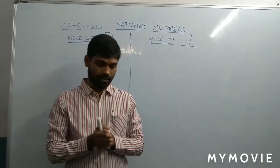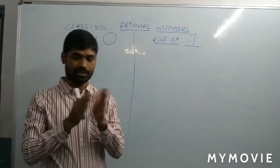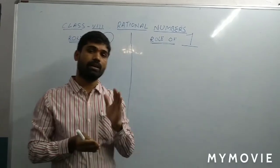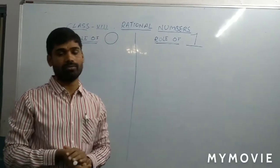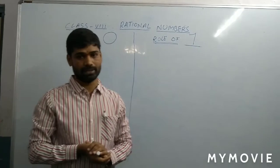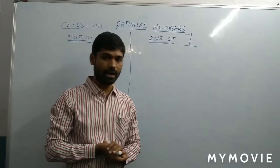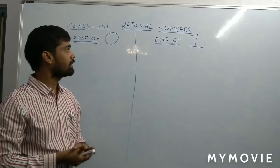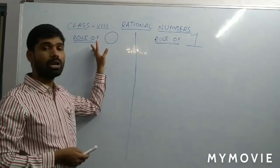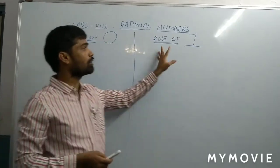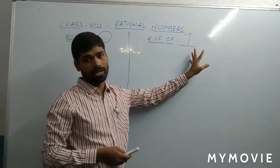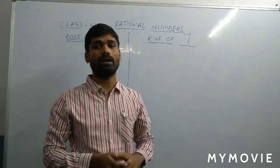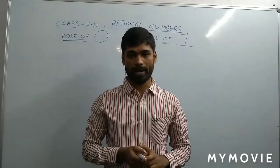In the previous session, we continued about the properties of Rational Numbers. And now, today, a very important topic is about the role of 0 and the role of 1. So, what is the role of 0 and what is the role of 1?